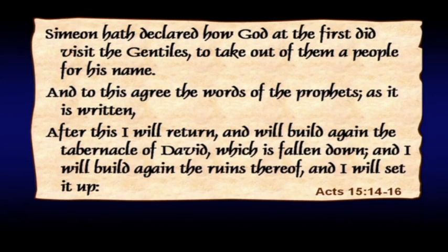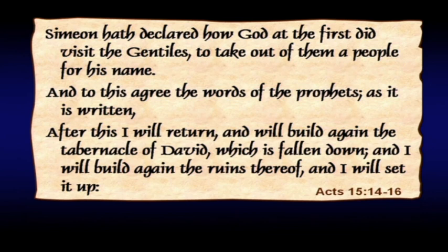In Acts chapter 15, verses 14 through 16, James says: 'Simeon hath declared how God at the first did visit the Gentiles to take out of them a people for his name. And to this agree the words of the prophet.' Then James quotes from Amos chapter 9, verse 11, in which he says, 'After this, I will return.' That's a strange expression to find in the Old Testament — God speaking through Amos says 'after this, I will return.' The grammar requires that for him to return, he must have left. He's apparently been on the earth, and after this he will return and build again the tabernacle of David.